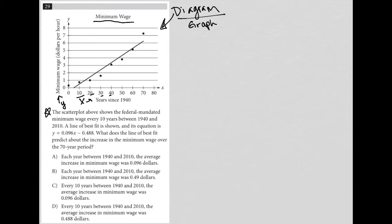So the question asks, the scatter plot above shows the federal mandated minimum wage every 10 years between 1940 and 2010. So we see that the minimum wage in 1940 was down here, but then 1950 it moved up, 1960 it moved up, 1970. Every 10 years, each of these data points represents 10 years later and where the minimum wage is at that time.